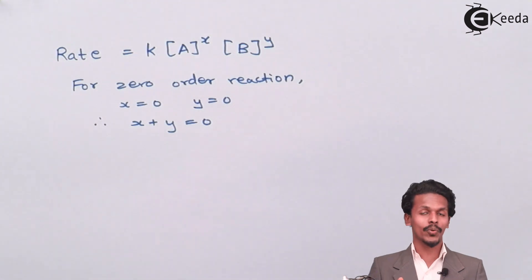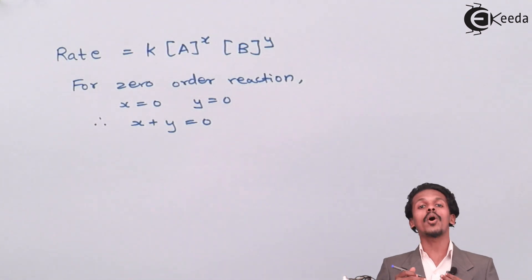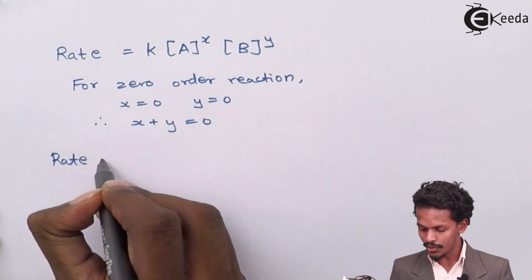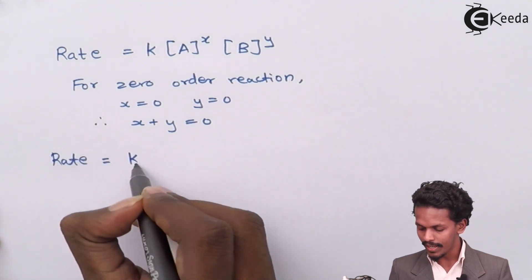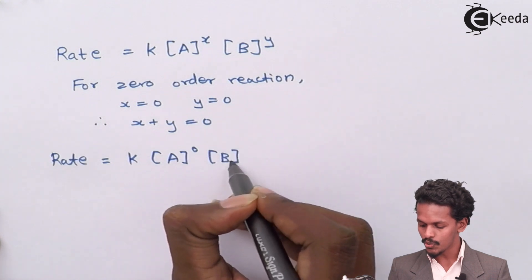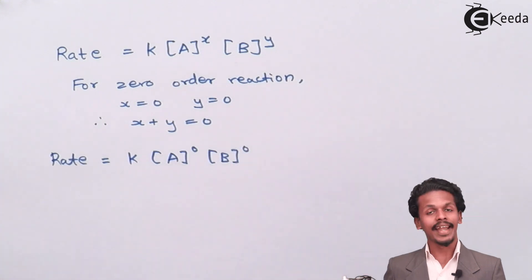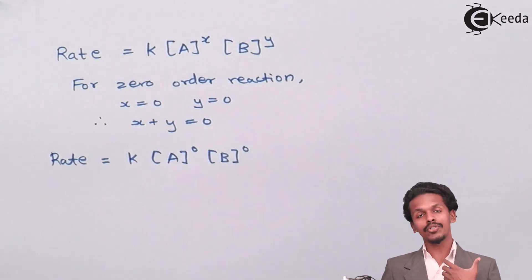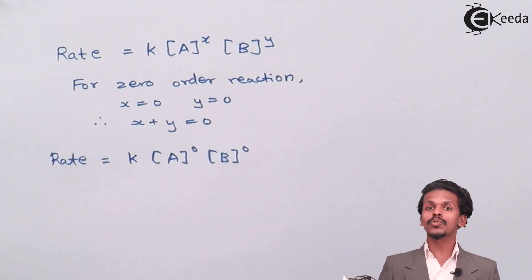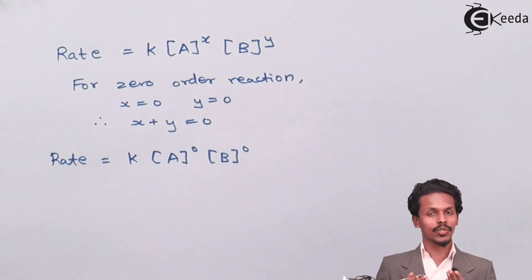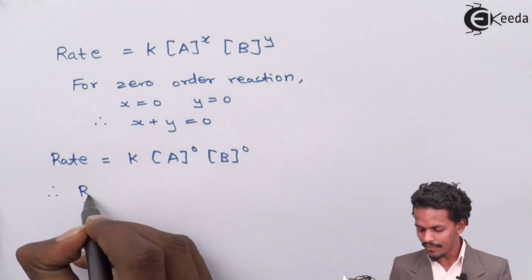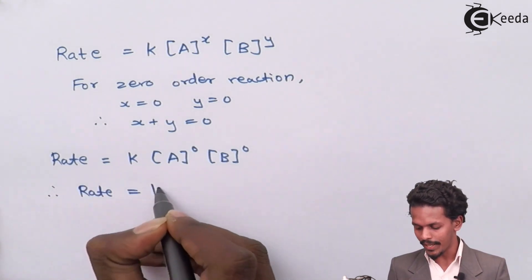Substituting these values into the rate law gives: rate equals k times A raised to 0 times B raised to 0. Since any value raised to 0 is 1, A raised to 0 is 1 and B raised to 0 is also 1. Therefore, rate equals k.